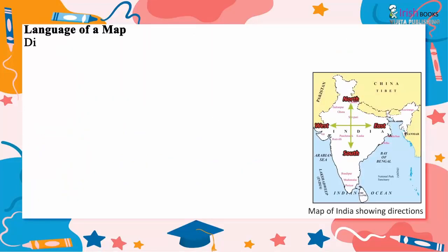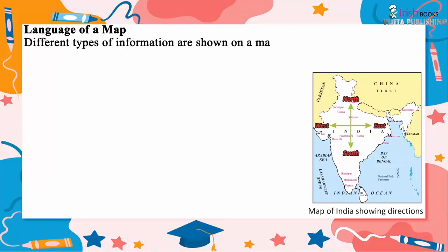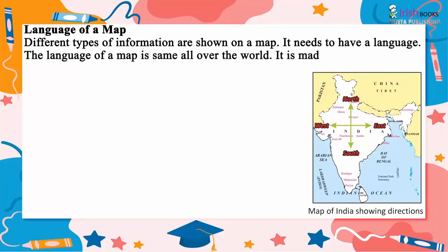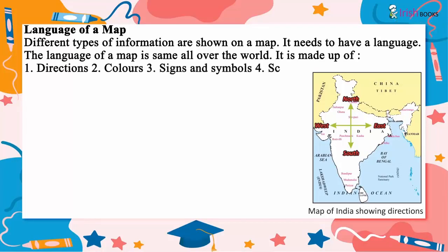Language of a map. Different types of information are shown on a map, and it needs to have a language. The language of a map is the same all over the world. It is made up of: 1. Directions, 2. Colors, 3. Signs and symbols, 4. Scale.